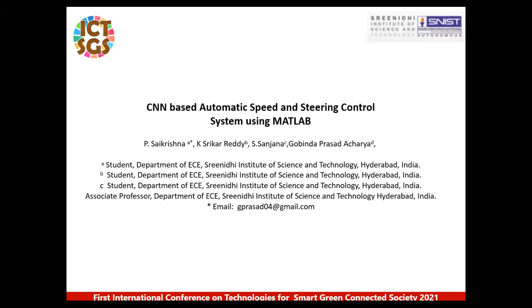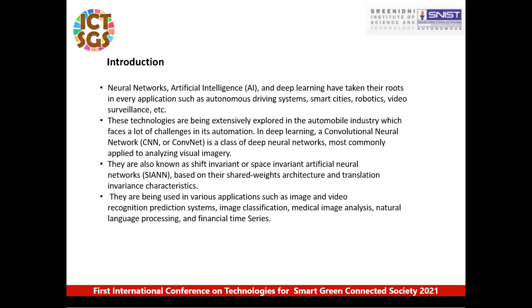The paper explains about the project CNN based automatic speed and streaming control which is actually developed in MATLAB. The core system of this project entirely depends on machine learning algorithms and vision software. Neural networks, artificial intelligence, and deep learning have taken their roots in every application such as autonomous driving systems, smart cities, robotics, video surveillance, etc. These technologies are being extensively explored in the automobile industry, which faces a lot of challenges in its automation.